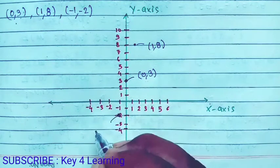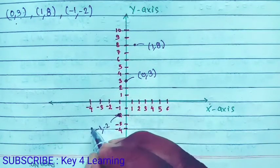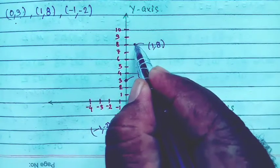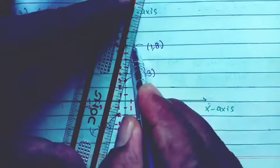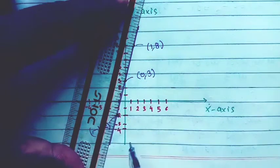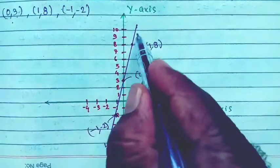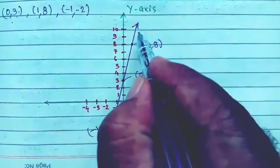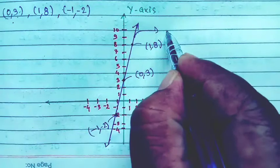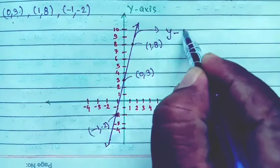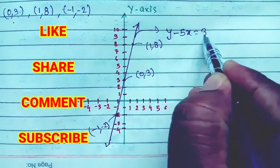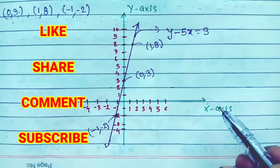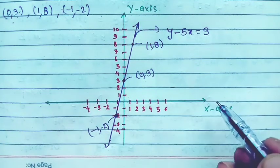अब इन तीनों points को एक line से मिला दीजिए। जब आप line draw करेंगे तो यह तीनों points उस पर आएंगे। Line के ऊपर equation लिख दीजिए: y − 5x = 3. तो यह हो गया हमारा graph भी complete। Hopefully आपको यह question समझ आया होगा। Thank you very much for watching.